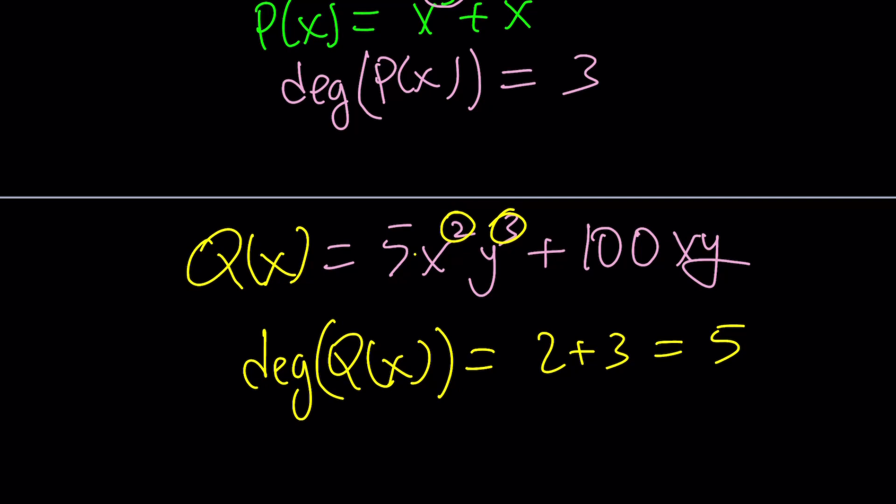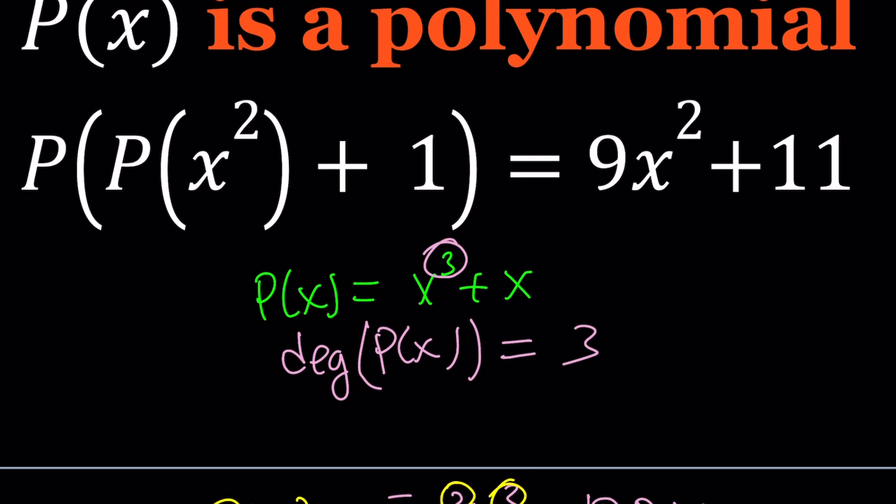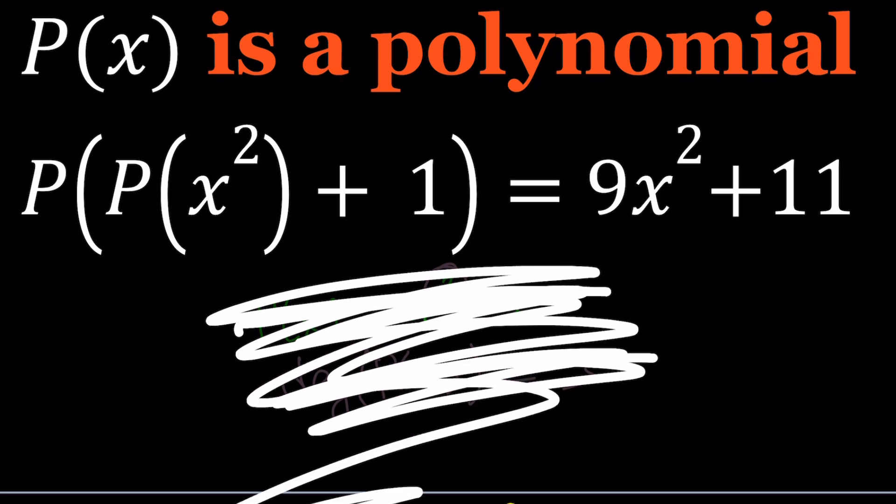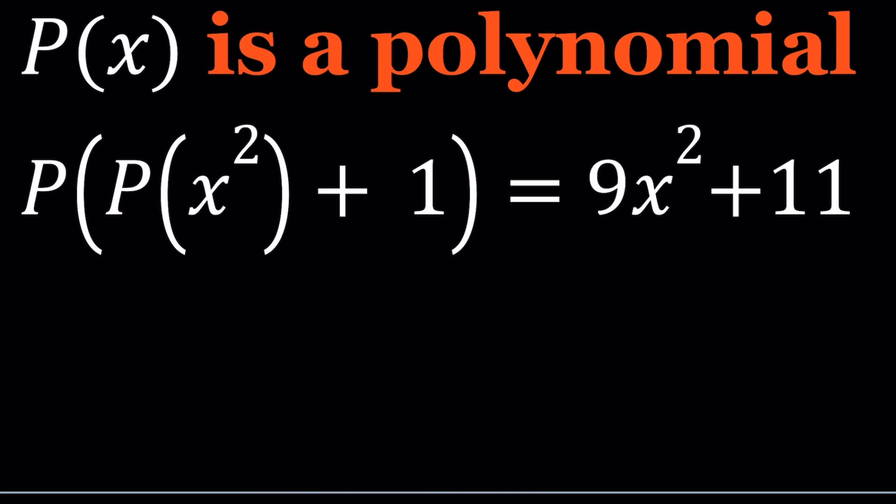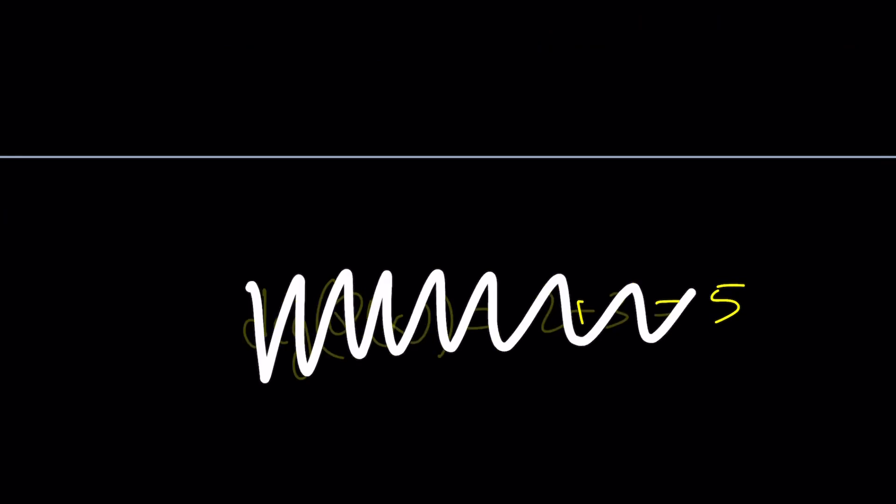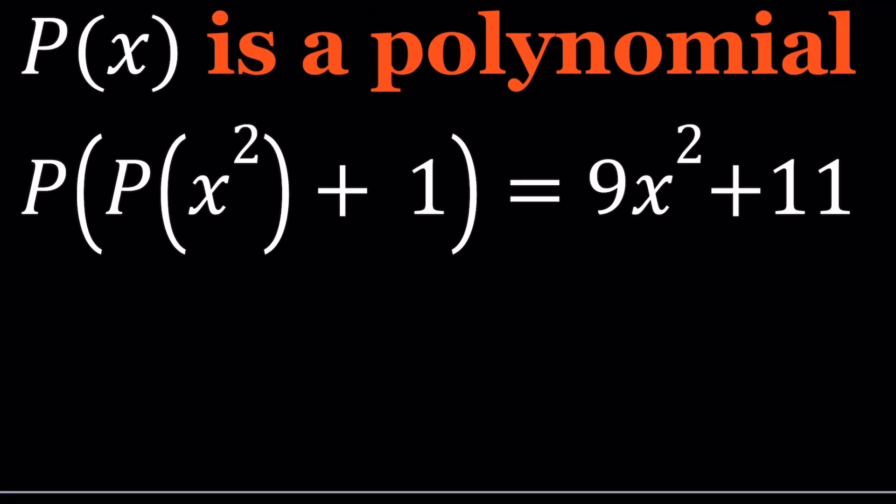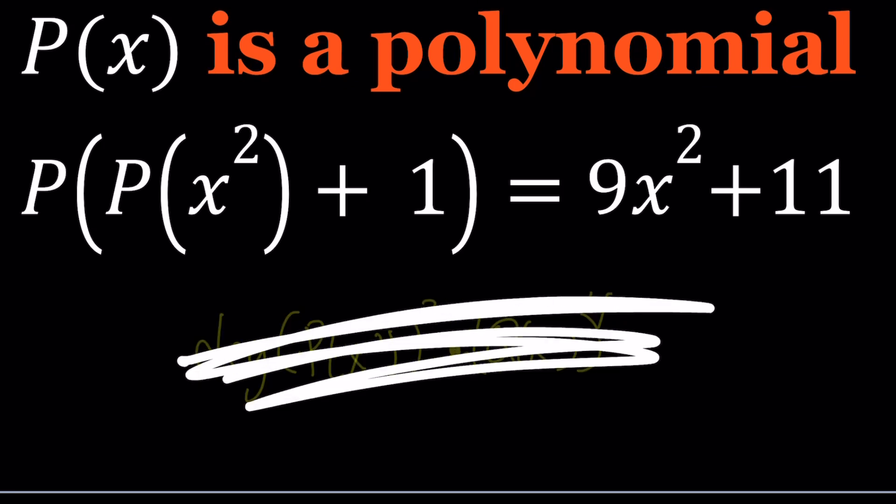Why is the degree important? Because you can make a lot of good decisions once you have an idea about the degree. For example, for this kind of problem, you don't really know anything about P of x except its degree. What might it be? Take a look. We have P of x squared. Obviously, what happens to the degree of P of x squared? Those kinds of questions are very common.